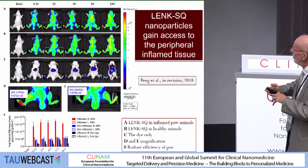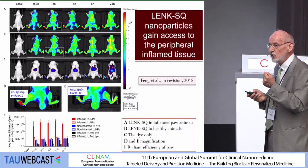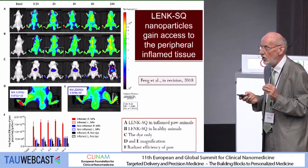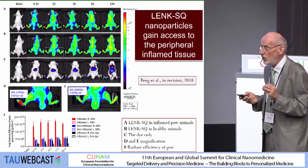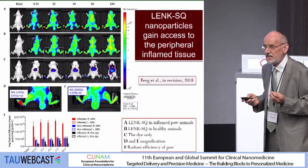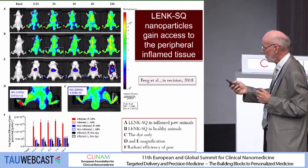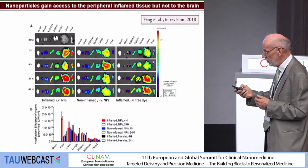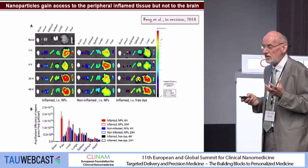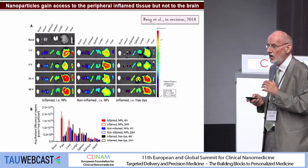We conducted a biodistribution study and looked at what happened at the level of the inflamed paw after administration of fluorescently labeled leu-enkephalin squalene nanoparticles. The nanoparticles clearly concentrated in the inflamed paw, which was not the case in the healthy contralateral paw. The leu-enkephalin squalene nanoparticles gain access to peripheral inflamed tissue. Overall biodistribution showed absolutely no passage of these nanoparticles or the peptide through the blood-brain barrier — nothing at the level of the brain.